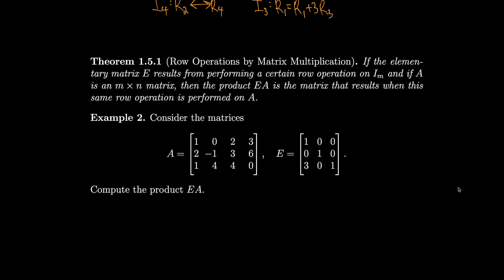If the elementary matrix E results from performing a certain row operation on I_m, and if A is an m-by-n matrix, then the product EA is the matrix that results when the same row operation is performed on A.